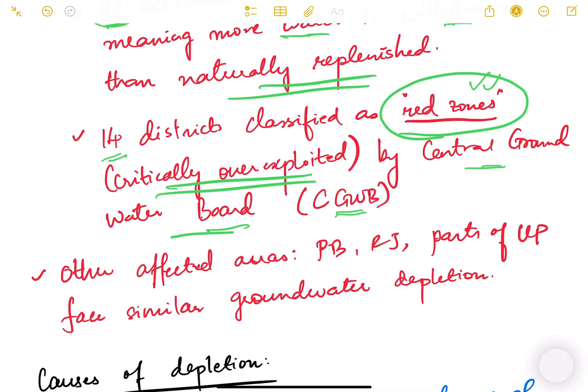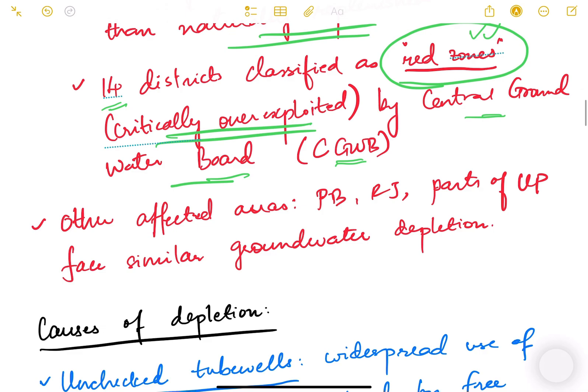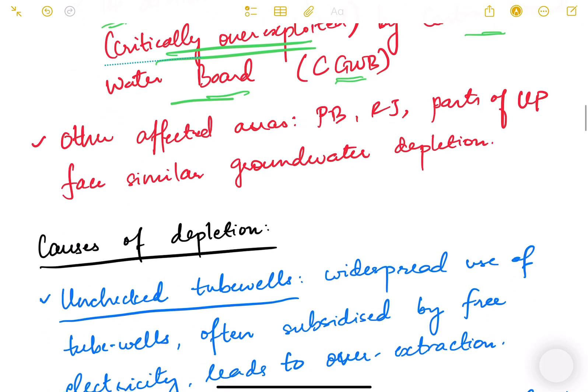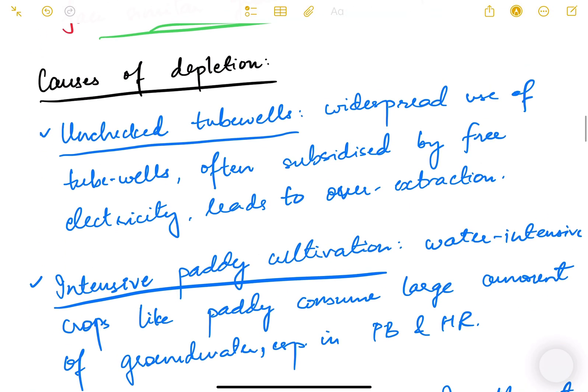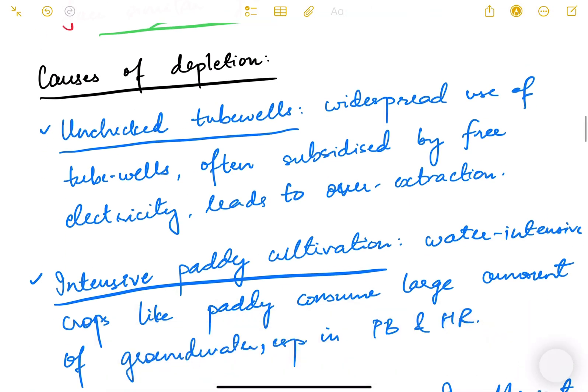Other affected areas include Punjab, Rajasthan, parts of Uttar Pradesh—they also face groundwater depletion problems. Now what are the causes of this depletion?